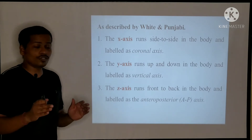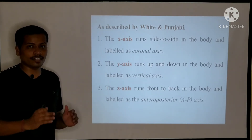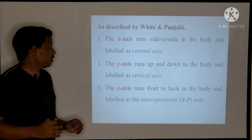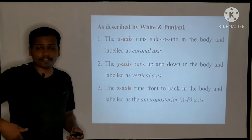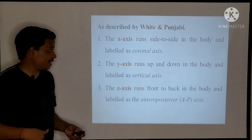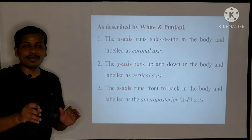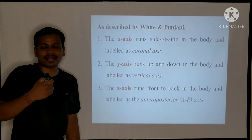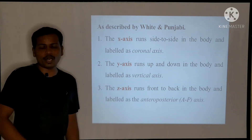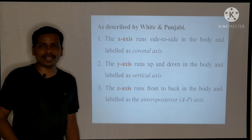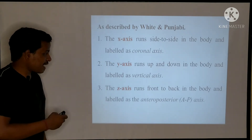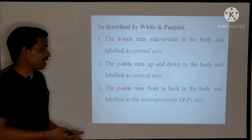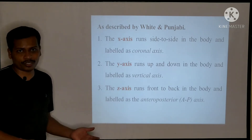Now let us see the origin of each axis individually. According to White and Punjabi, the X-axis runs from side to side in the body and is labeled as the coronal axis. The Y-axis runs from up to down and is labeled as the vertical axis. The Z-axis runs from front to back and is labeled as the anterior-posterior axis.